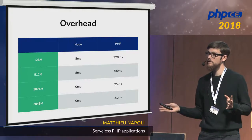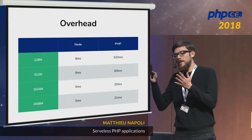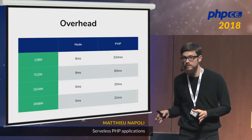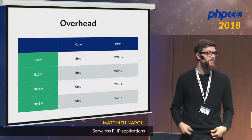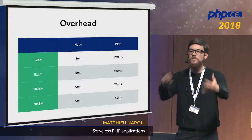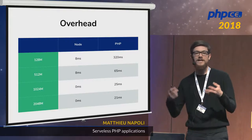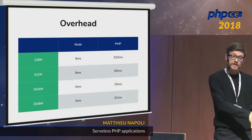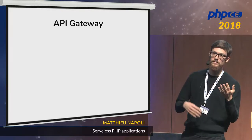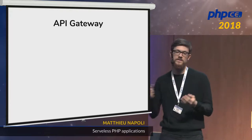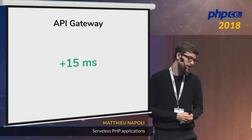For HTTP, you have to use API Gateway — that's basically the Nginx or Apache of Amazon, the server that receives the request and calls Amazon Lambda. It adds about 15 milliseconds of network delay. But maybe you are already using PHP-FPM, Nginx or Apache, with a reverse proxy or Varnish, CDN, or load balancer — so you may already have some network time. That's up to you to decide.